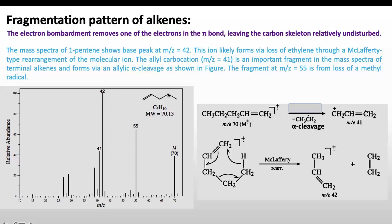We also see a peak at 55, which arises from the loss of a methyl radical from the molecular ion. Another peak at 41 appears due to alpha cleavage — the loss of the bond neighboring the radical site. The bond between the CH2 adjacent to the radical site breaks through alpha cleavage, giving a fragment with m/z 41. Through these mechanisms we can interpret all significant peaks appearing in the mass spectrum of pentene.